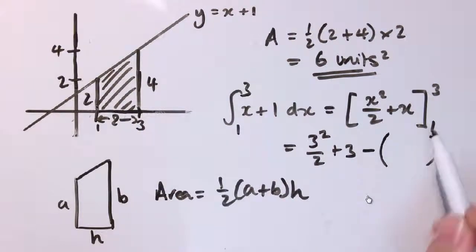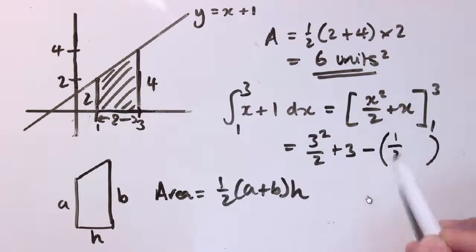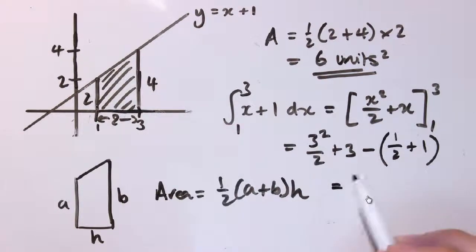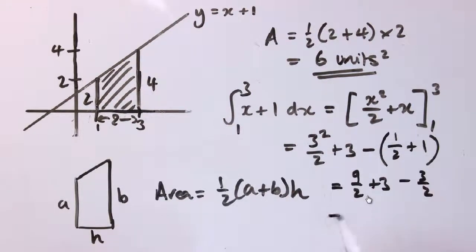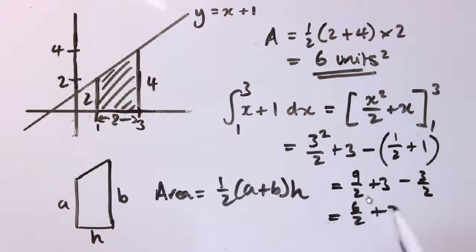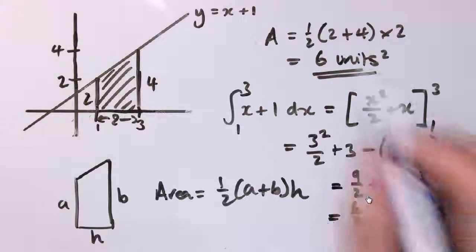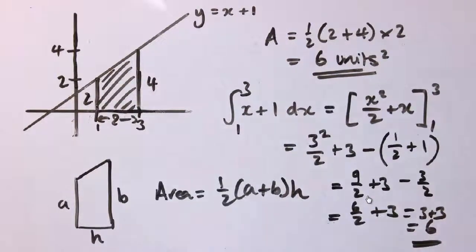We substitute in 3 to get 3²/2 + 3, then subtract what we get when we substitute in 1: 1²/2 + 1. This gives 9/2 + 3 − 3/2, which is 9/2 − 3/2 = 6/2 = 3, and then 3 + 3 = 6 units squared — exactly as before.